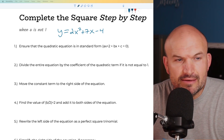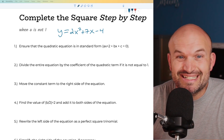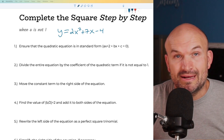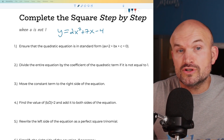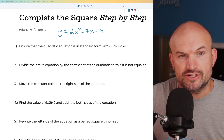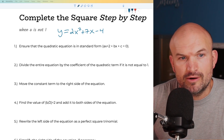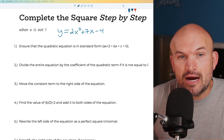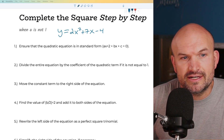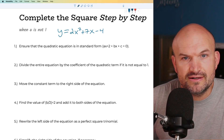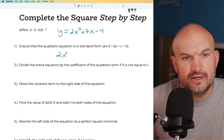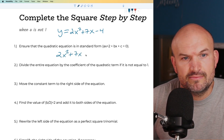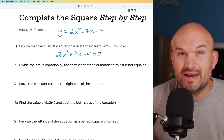The first step is to ensure the quadratic equation is in standard form — we're solving the quadratic equation. You can see it's already in descending power order, so I can rewrite this as 2x² + 7x - 4 = 0.